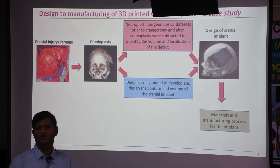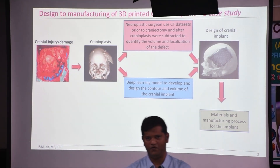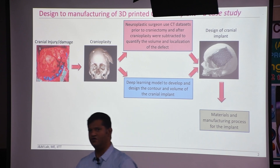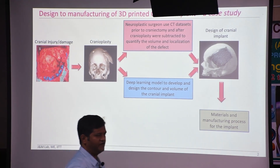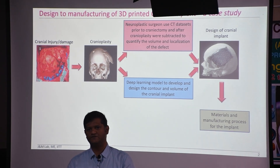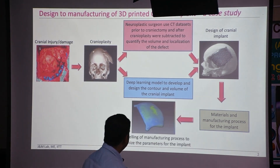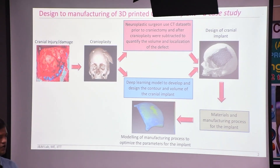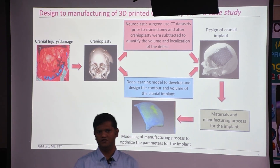An important consideration is cost: manufacturing a typical cranial implant made of titanium using selective laser melting can cost up to 50,000 to 60,000. To optimize the process parameters for a given implant and material, experimentation alone would be very expensive and time consuming. Therefore, we are working on numerical simulation techniques to simulate the implant manufacturing process and optimize it using thermo-mechanical analysis.